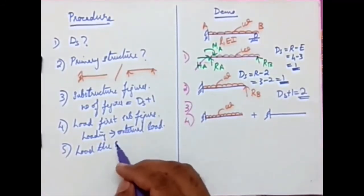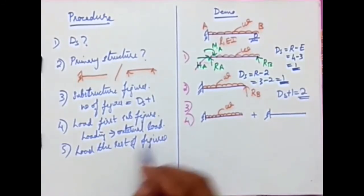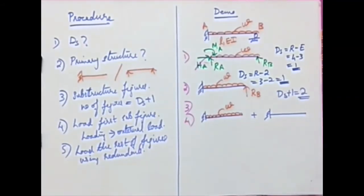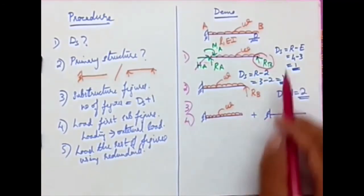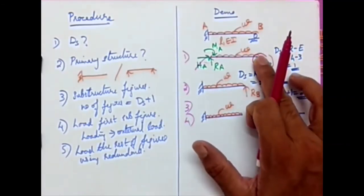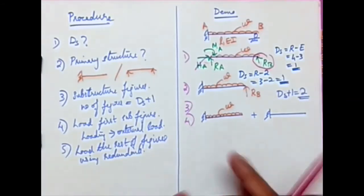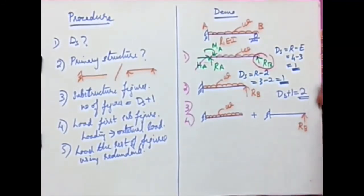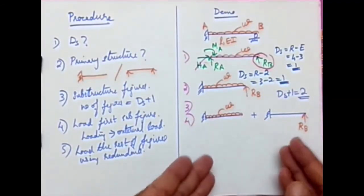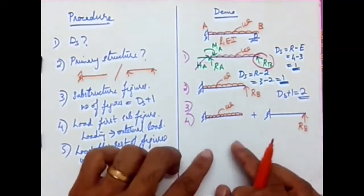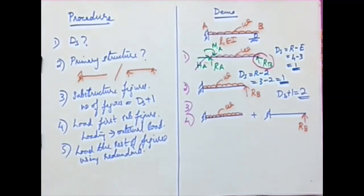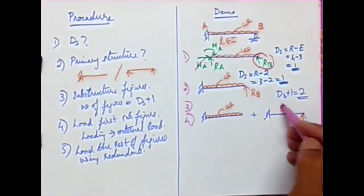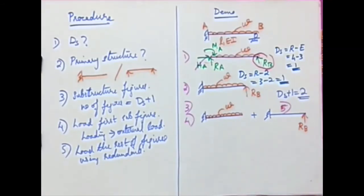Step 5: load the remaining figures using redundants. In our case we have just one redundant — by assuming a cantilever profile we released one reaction, which became redundant. Apply that redundant R_B to the second figure. If there are more redundants, DS increases and you have more sub-figures — apply only one redundant per figure at a time.